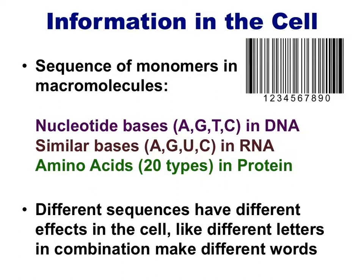At its most basic level, the central dogma and all of molecular biology relates to how information is transferred and processed inside of a cell. How do you fit information into a microscopic cell, and what kind of information can you fit in there? The information in a cell is found within the sequence of monomers, or building blocks, which make up a macromolecule. This means that the many nucleotide bases which make up a larger DNA molecule are found in a specific sequence or order, and that this sequence has a meaning or purpose in the cell.